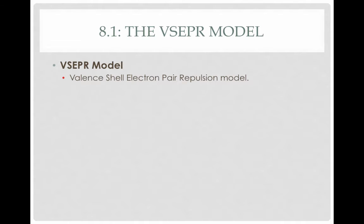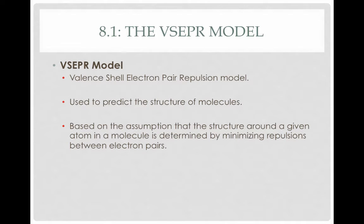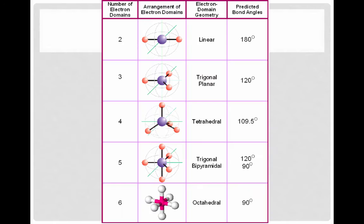The VSEPR model is an acronym that stands for valence shell electron pair repulsion model. As the name suggests, it predicts the structure of molecules based on the assumption that electron pairs are going to want to be as far away from each other as possible in the molecule, since electron pairs will repel each other. In order to reduce electron repulsion, we put the electron pairs as far away as possible. This dictates where the bonds will be in a molecule, and thus the shape of the molecule.